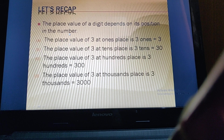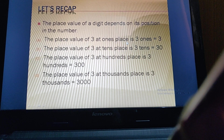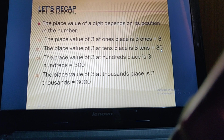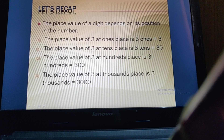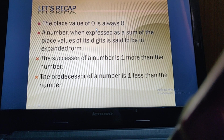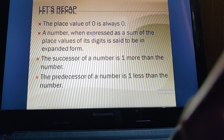The place value of a digit changes based on its position. For example, if 3 is at the ones place, its place value is 3. If 3 is at the tens place, its place value is 30. If 3 is at the hundreds place, it is 300. If 3 is at the thousands place, it is 3000. The place value of zero is always zero.